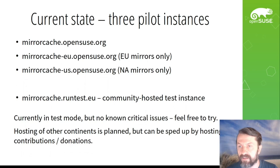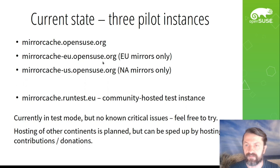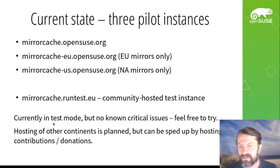Regarding the current state, there are three pilot instances. One is with European mirrors only, one is with North American mirrors only, and one instance is a kind of gateway that has all the rest of the mirrors. Whenever European or North American clients request something from mirrorcache.opensuse.org, their request gets redirected to one of the local instances, and all other countries are served by the main instance. Currently all these instances run in test mode but there are no known critical issues.